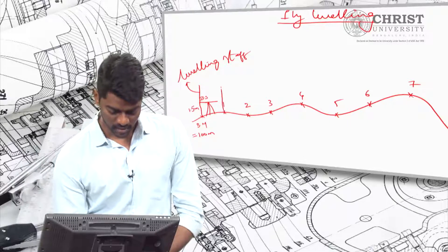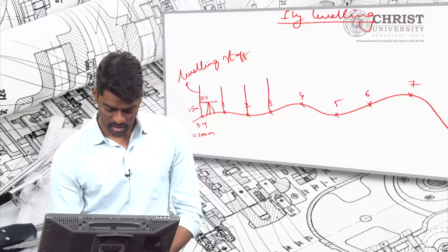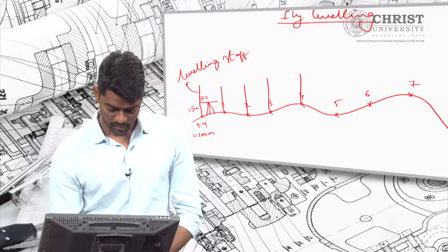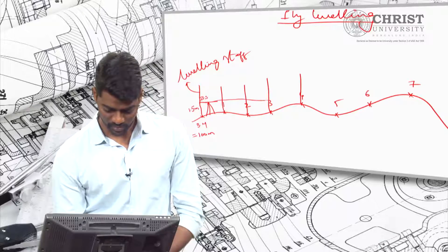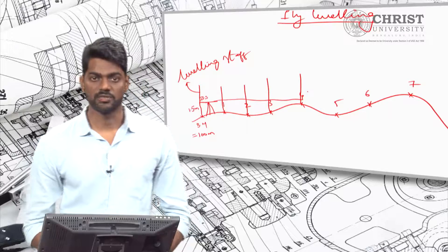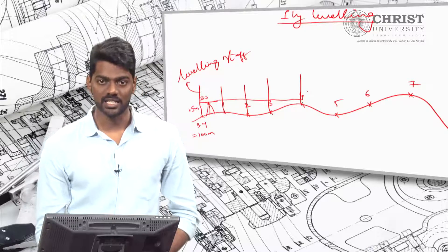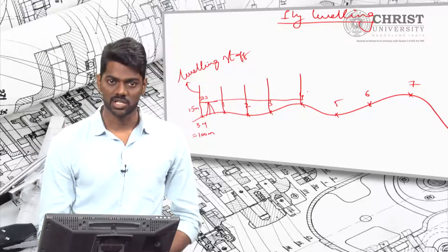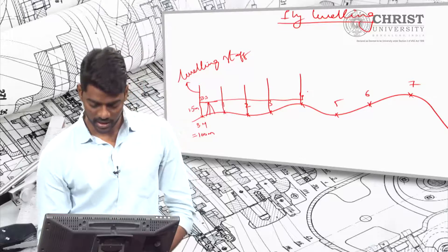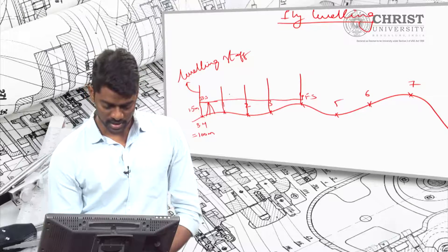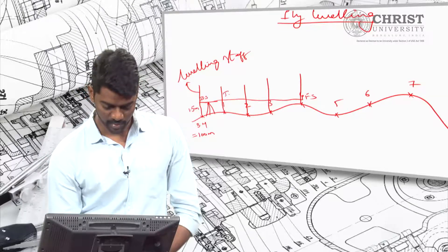The point where you take the reading in the forward direction is called foresight. The last point you can see from the station is taken as a foresight, and all remaining points are considered as intermediate sights.